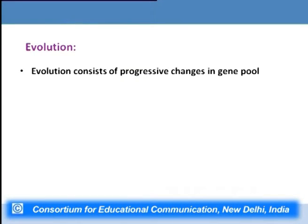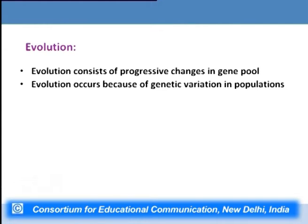What exactly is evolution? Evolution consists of progressive changes in the gene pool of a population. The gene pool is the sum total of all genes and alleles present in a given population of a species. Evolution is how allele frequencies of different genes change in a given population, and it occurs because of genetic variation. If all populations are similar, evolution cannot take place.